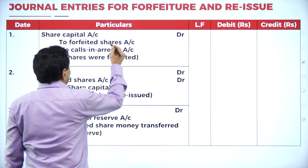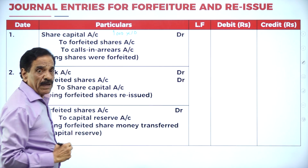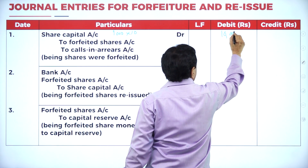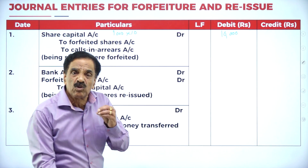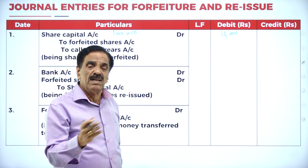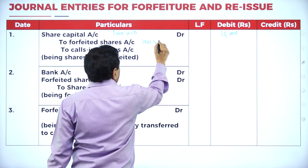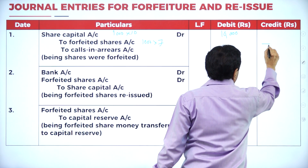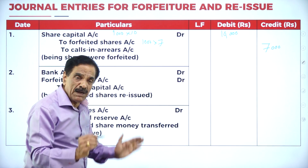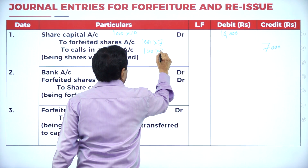1,000 shares of ₹10 each: Share Capital Account Dr. ₹10,000. He already paid ₹7 (on application, allotment, and first call): to Forfeited Shares Account ₹7,000. He could not pay the final call of ₹3: to Share Final Call (Calls in Arrears) ₹3,000.